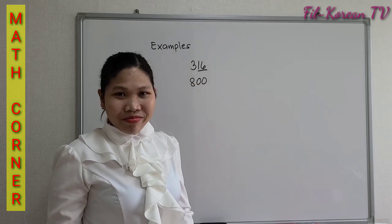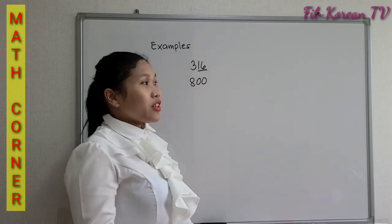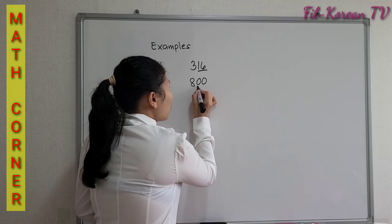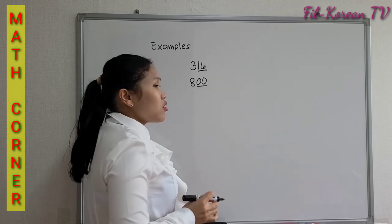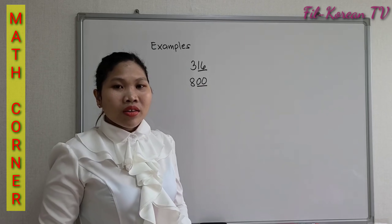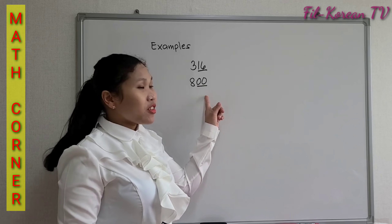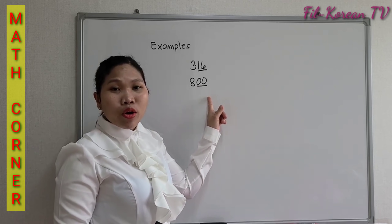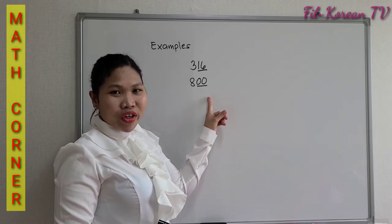Another example: 800. The number 800 ends in two zeros, so 800 is divisible by 4.